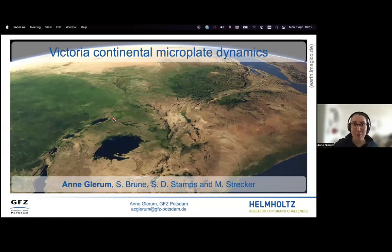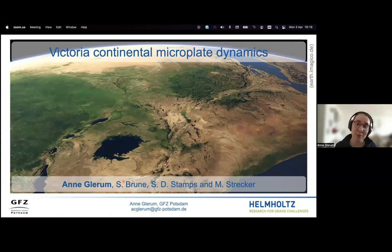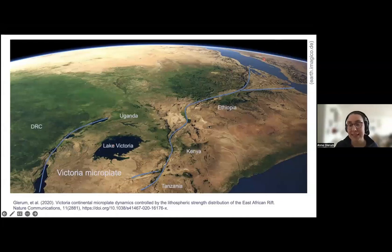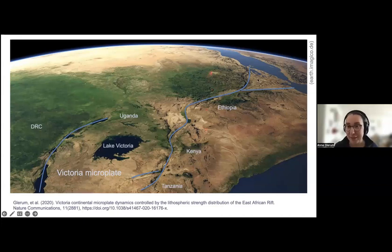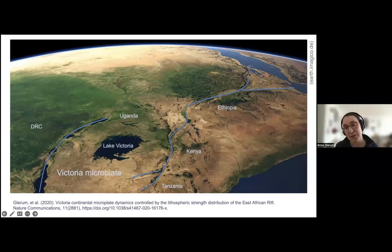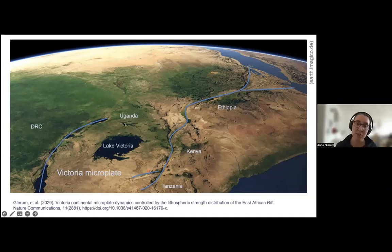Thank you for the opportunity to present our work on the Victoria Continental Microplate Dynamics today. The Victoria Microplate is part of the East African Rift System, which is the largest active continental rift system on Earth. It runs from the Afar region in the north all the way down to Mozambique, and it's made up of two branches: the eastern branch running down to Tanzania, and the western branch running from Uganda to Mozambique. Together they encompass the Victoria Microplate.